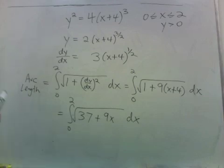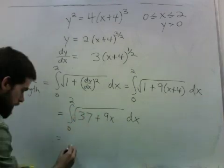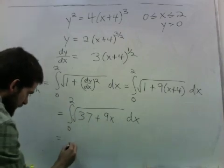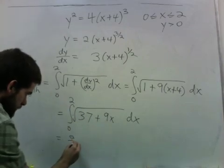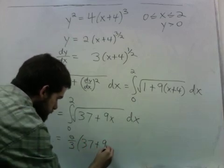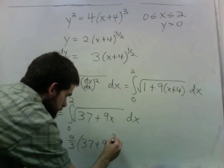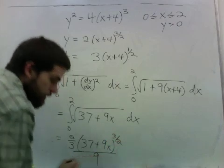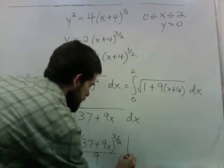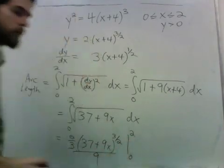An antiderivative, you could substitute for this. Well this is to the 1 half, so I add 1 to that and divide by that, to get 2 thirds in front. Then I divide by this 9, and I'm going from 0 to 2.